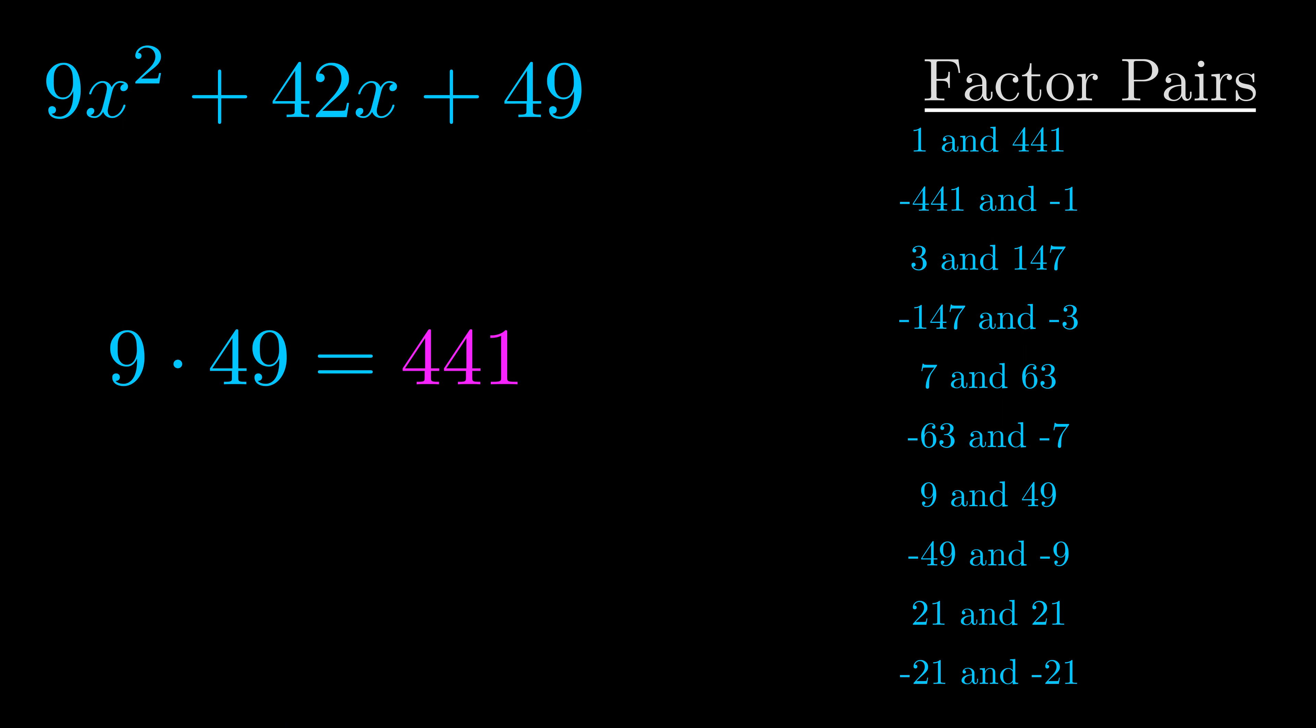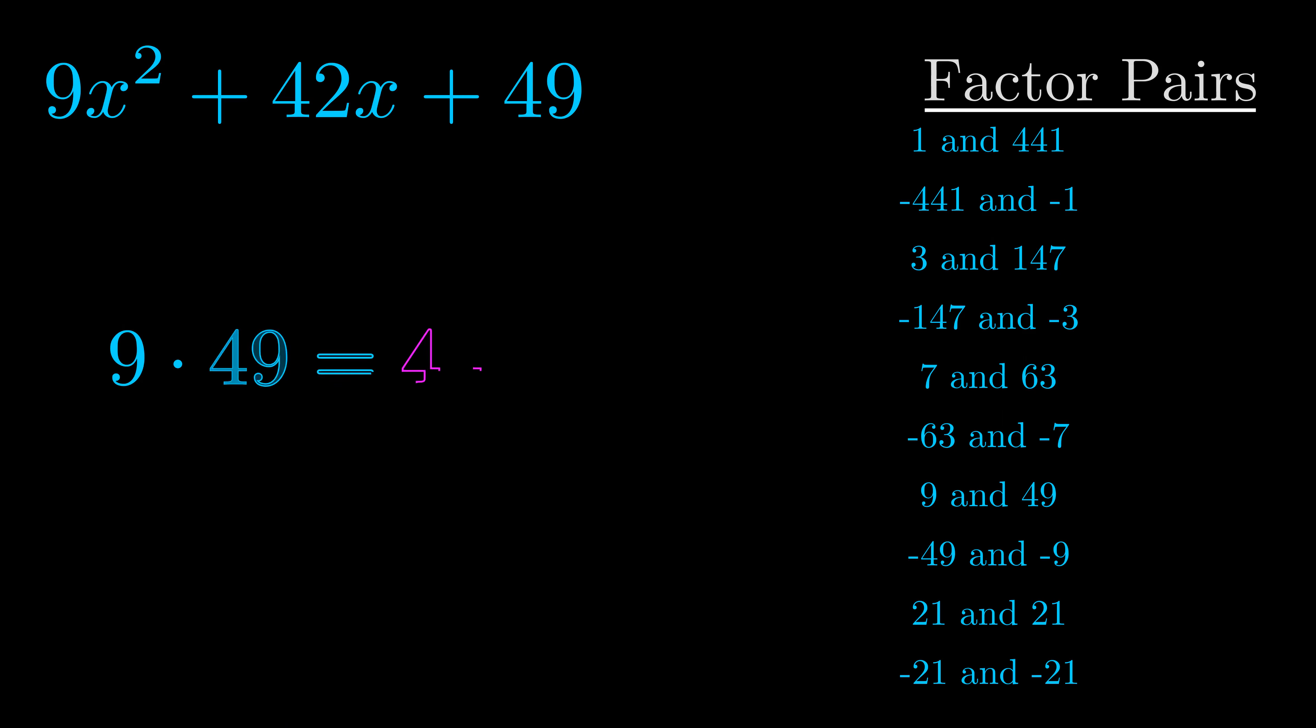Now once you have these factor pairs the goal is to find which of these pairs adds to the b value. The b value is the coefficient on the x term. That's the middle term, the one that we haven't done anything with yet. And really this is the only factor pair that we need.